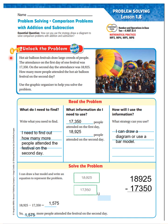Unlock the Problem. It says: Hot Air Balloon Festivals draw large crowds of people. The attendance on the first day of one festival was 17,350. On the second day, the attendance was 18,925. How many more people attended the Hot Air Balloon Festival on the second day? Use the graphic organizer to help you solve the problem. What do I need to know? It's asking how many more people attended on the second day. I need to find out how many more people attended on the second day. What information do I need? On the first day there were 17,350, and on the second day there were 18,925.